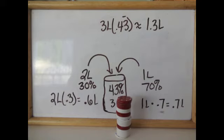We can also see how many liters ended up in our solution, so we know it's a 43 percent solution. So we can multiply the number of liters, 3 because we added 2 and 1, by 0.43 with a line over it, and we get approximately 1.3 liters.